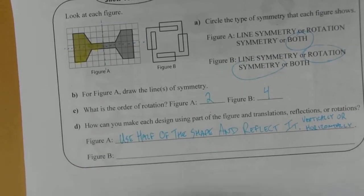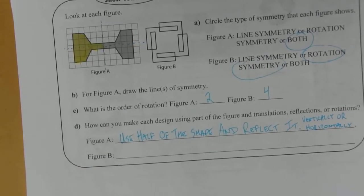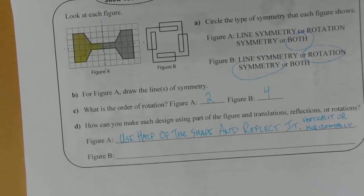For part B, there are no lines of symmetry on that one so you're not going to be able to use reflection. And translation won't work either in this particular instance, you're going to have to use a rotation.